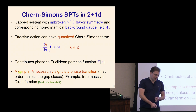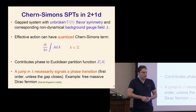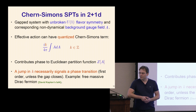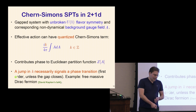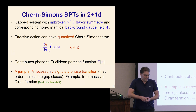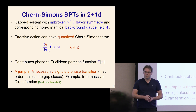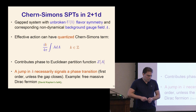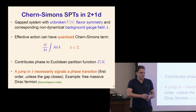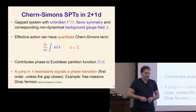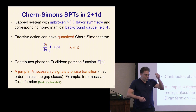SPTs can be used to diagnose phase transitions you would not otherwise be able to detect. If you encounter two different phases labeled by different integer k, then in the middle you must somewhere encounter a non-trivial phase transition — you don't know the order, it could be first or second order. A simple example, which David reviewed, is a free massive Dirac fermion, which you can integrate out to get a jump in the Chern-Simons term. In the free fermion example the phase transition is second order because you go through the massless point.